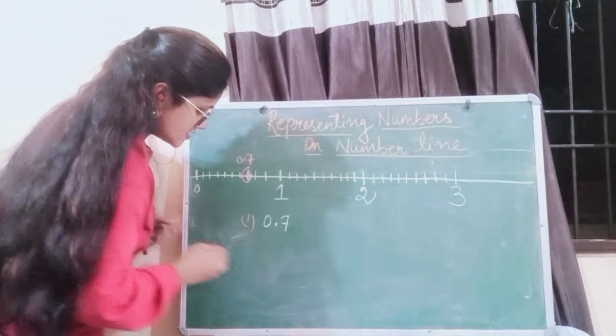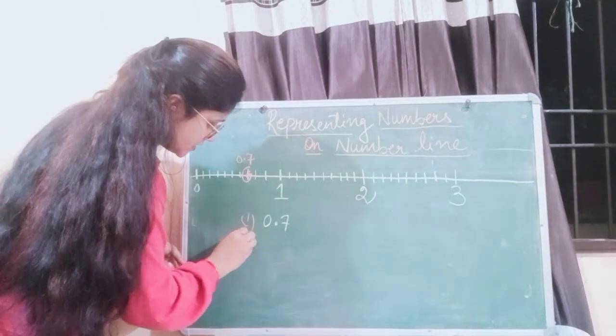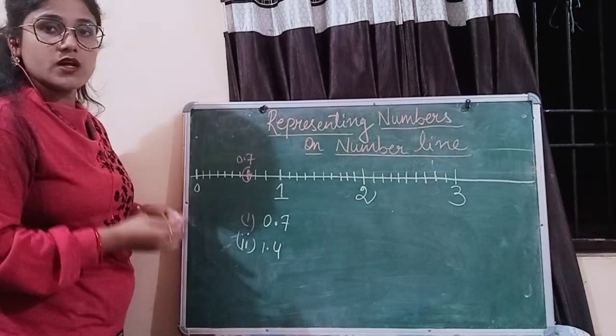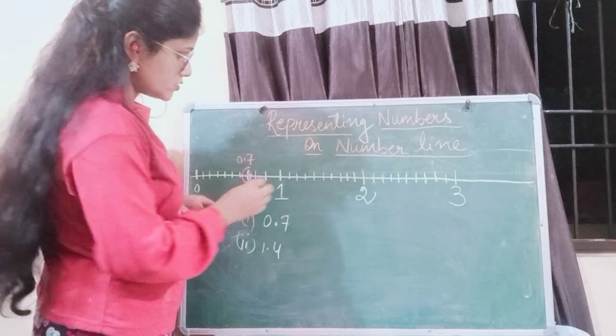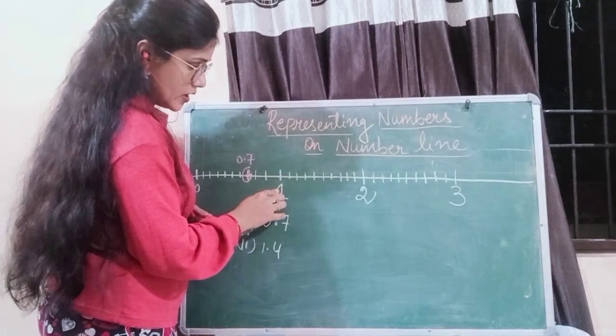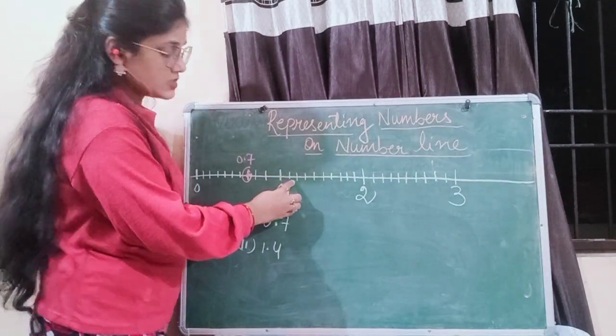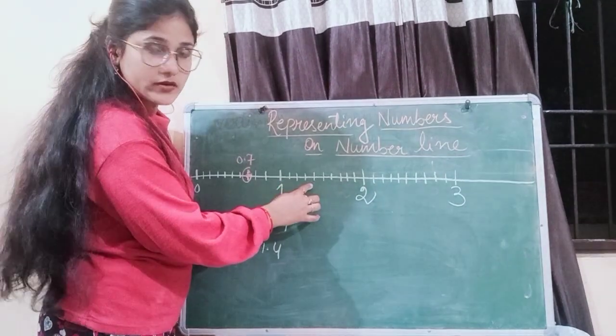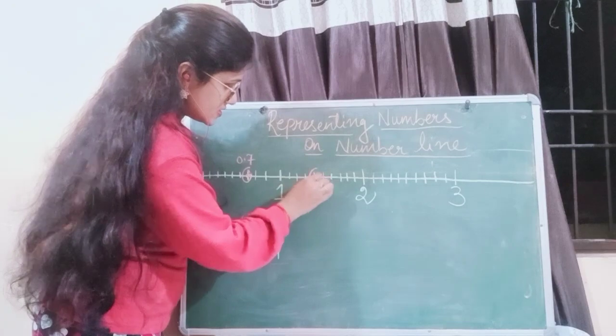If I ask you to plot another point, that is 1.4, where are you going to plot? You will count - this is 1, so then next is 1.1, 1.2, 1.3, 1.4, so this is the point 1.4.